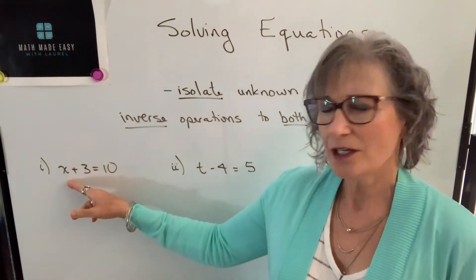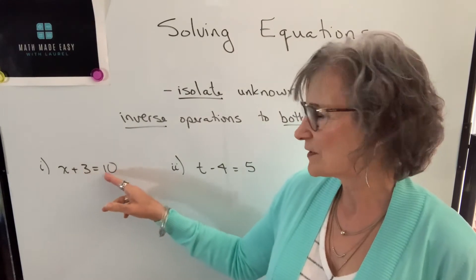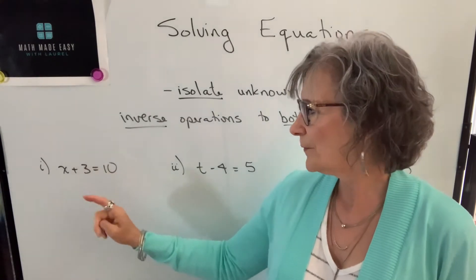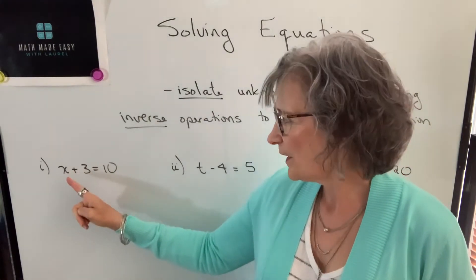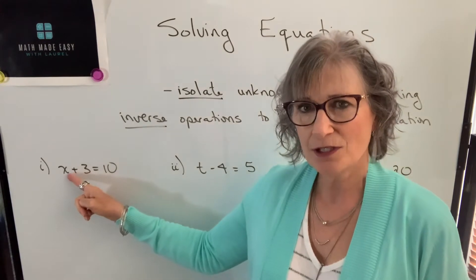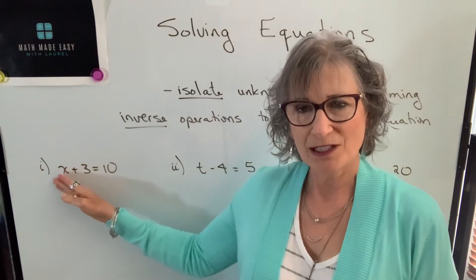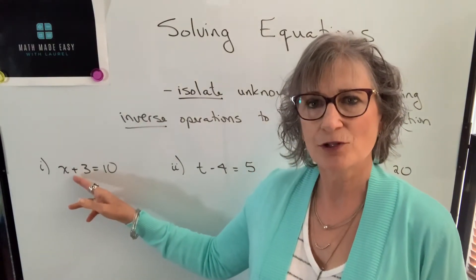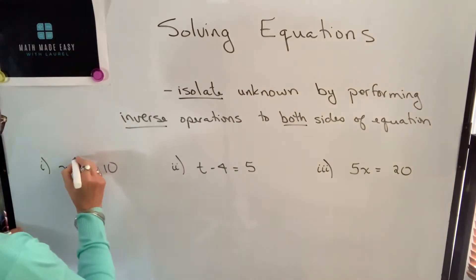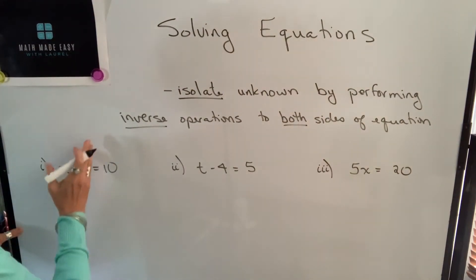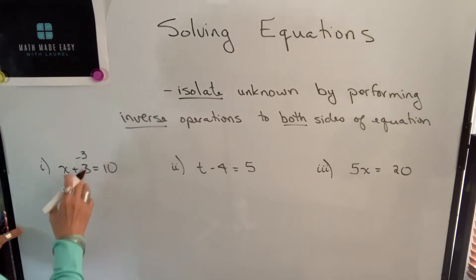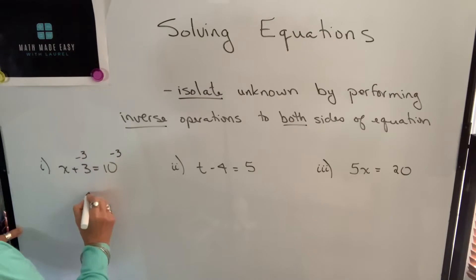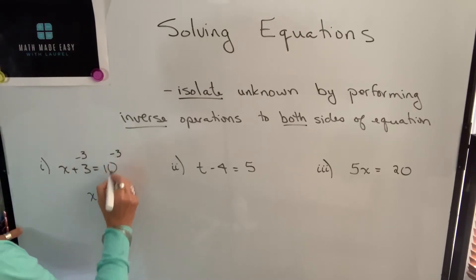If we were asked to solve for x, and we know that x plus 3 equals 10, we want to know what x must equal to make this equation true. We isolate x by performing the inverse operation. Since 3 is being added, we subtract 3 from both sides. 3 minus 3 is gone, leaving just x, and 10 minus 3 is 7.